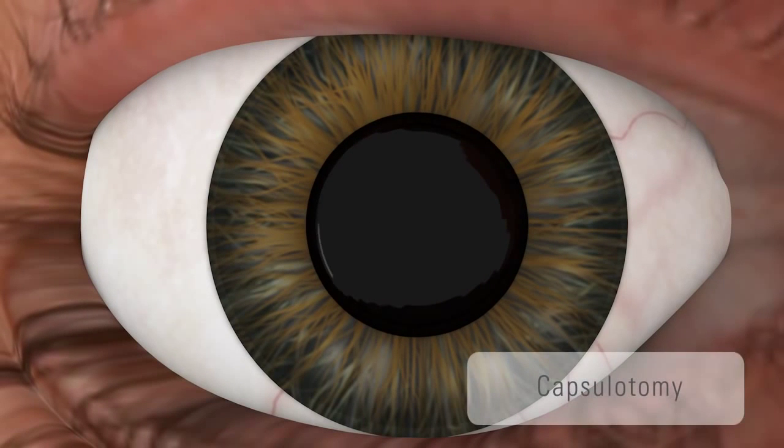In most cases, a perfect free-floating capsulotomy can be achieved without any tissue bridge thanks to the overlapping spots of the laser beam.